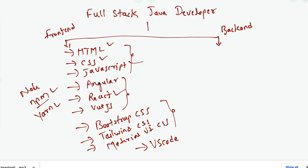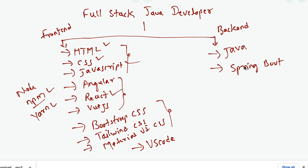Now let's look at the back end. First of all you need to know Java — learn all the OOP concepts, exception handling, and collections. Also learn Java 8 features like lambda expressions, Stream APIs, Date-Time APIs, and method references. Learn everything about Java features and the core Java fundamentals like OOP concepts, collections, exception handling, string handling, and arrays.